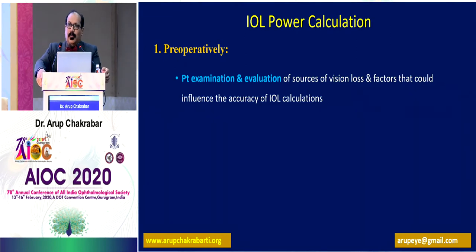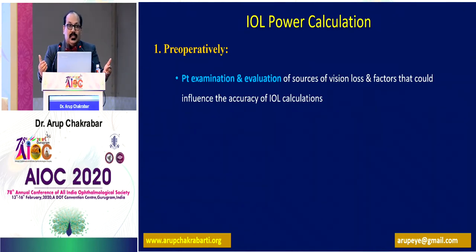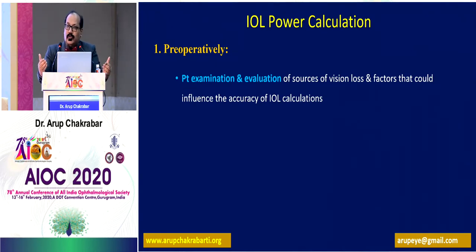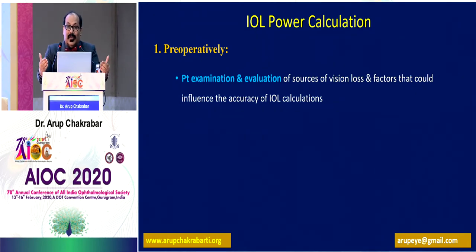Preoperatively, before I do the biometric evaluation and use the values for power calculation, I try to find out what exactly is causing the patient's vision loss. If it is a patient with high myopia and posterior staphyloma, I'll be skeptical about values obtained from ultrasonic biometry. If the patient has a posterior subcapsular cataract or an advanced cataract, even optical biometry may not give accurate values. Patients with strabismus or nystagmus will also give questionable values. So I need to determine whether the biometry values will be reliable.